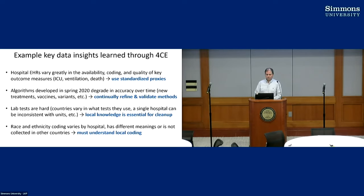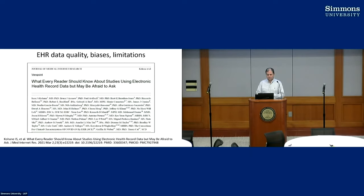We had high hopes for race and ethnicity studies, but we quickly learned that other countries view this differently. Many countries, especially in Europe, do not collect race-ethnicity data for privacy reasons, and different countries categorize race and ethnicity in different ways. Even in the U.S., where there are NIH standards, hospitals use local codes that must be mapped to NIH standards, and some accuracy is lost in that process. We summarized many of these data insights in a paper titled 'What Every Reader Should Know About Studies Using Electronic Health Record Data But May Be Afraid to Ask' — covering harmonization, data quality, missing data, and how to trust findings from EHR-based studies.